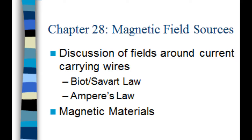Now what we're going to do in Chapter 28 is talk about Observation 2 in more detail. We're going to use two different methods to define magnetic fields around current-carrying wires. The first is called Biot-Savart, the second is called Ampere's Law. Then we're going to wrap up the chapter by talking about magnetic materials and their behaviors.